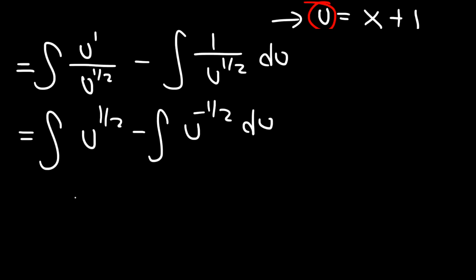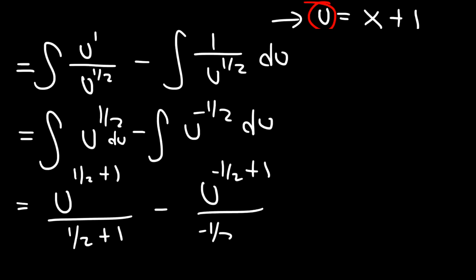And now we need to use the power rule in order to integrate this. So it's going to be u to the 1 half plus 1 divided by 1 half plus 1. And then for the other one, it's going to be u to the negative half plus 1 over negative half plus 1, and then plus some constant c.